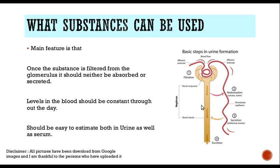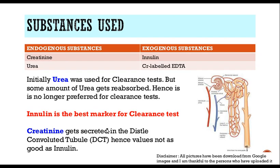The level of the substance in the blood should be constant throughout the day — there should be no fluctuating rise or fall of the substance. Third, it should be easy to estimate both in the urine and in the serum. Now, what are the common substances used? Substances can be endogenous — that is, produced by the body — or exogenous, where we inject the substance into the body and then see how much is being excreted. The best endogenous marker is creatinine.